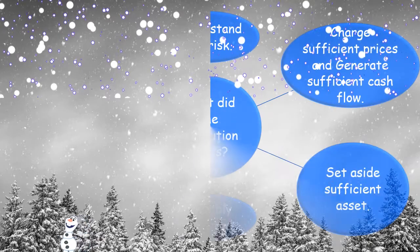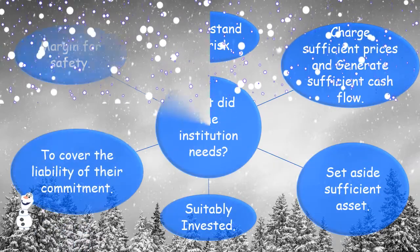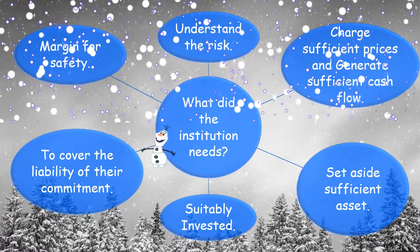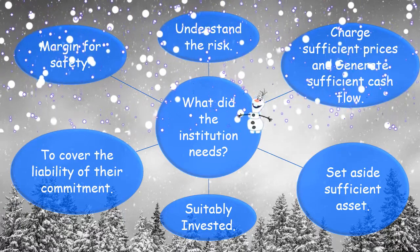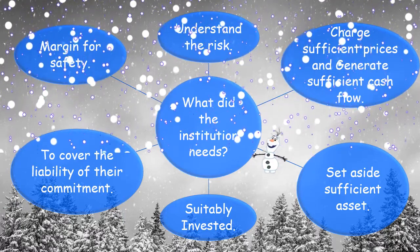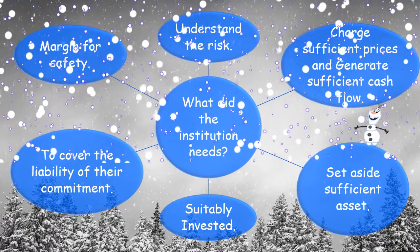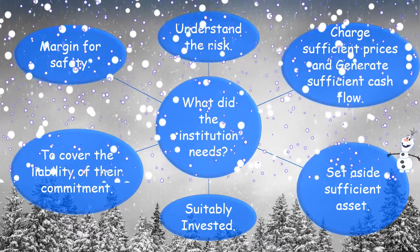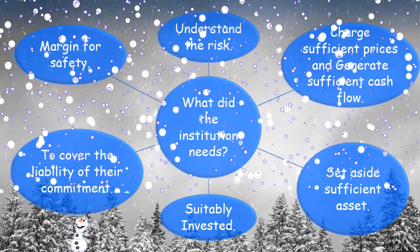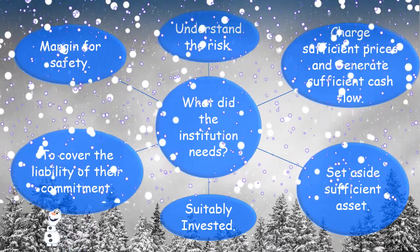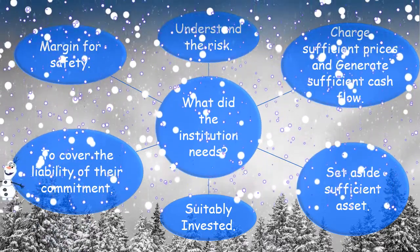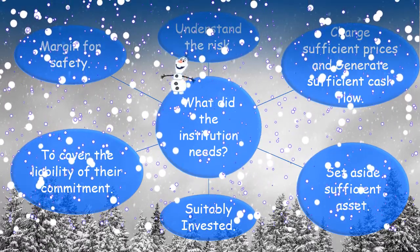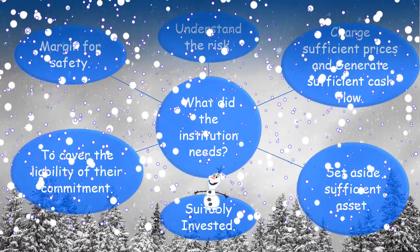What does the institution need? The institution needs to understand the risk, charge sufficient prices, and generate sufficient cash flow. They also need to set aside sufficient assets that are suitably invested. They also need to cover the liability of their commitments and maintain a margin for safety.